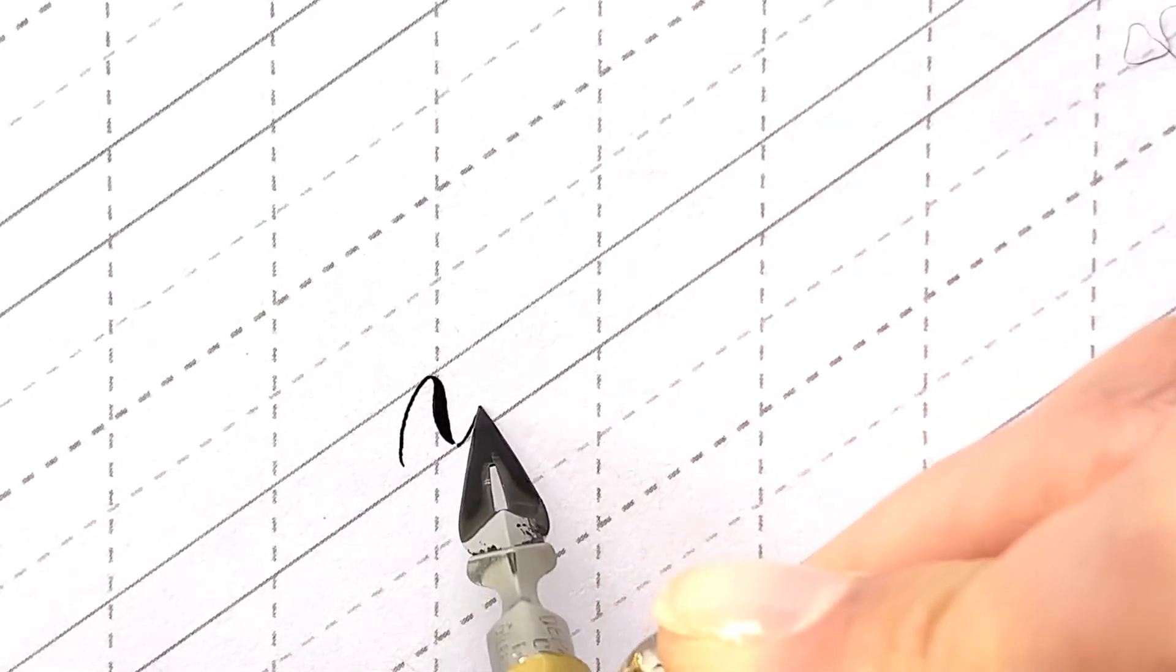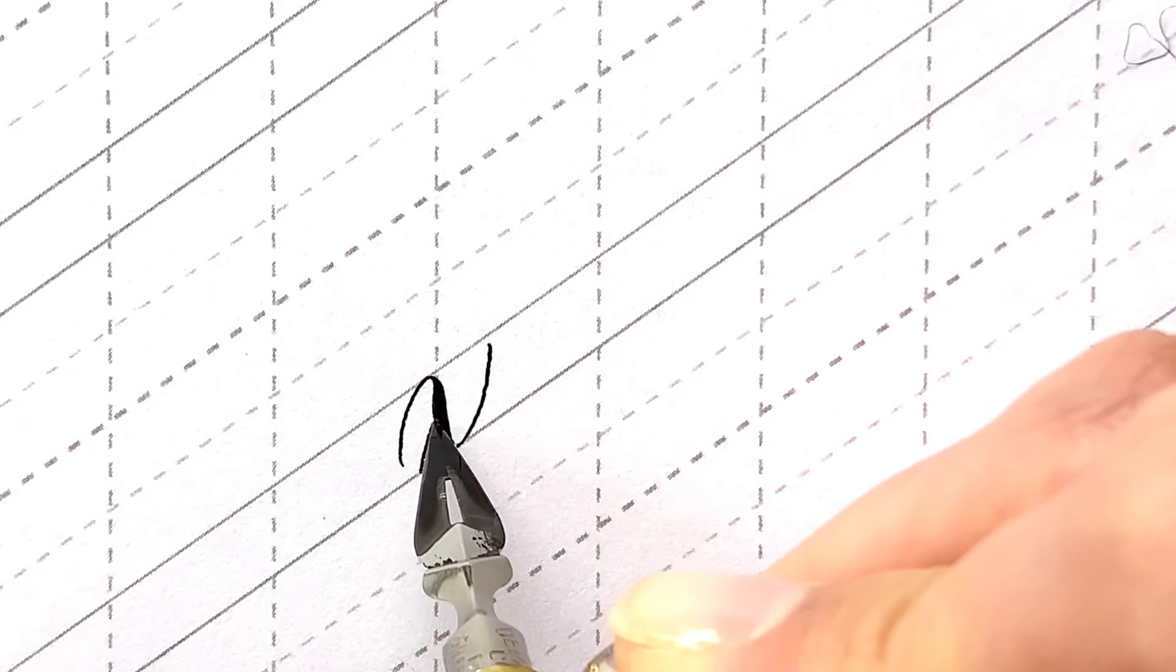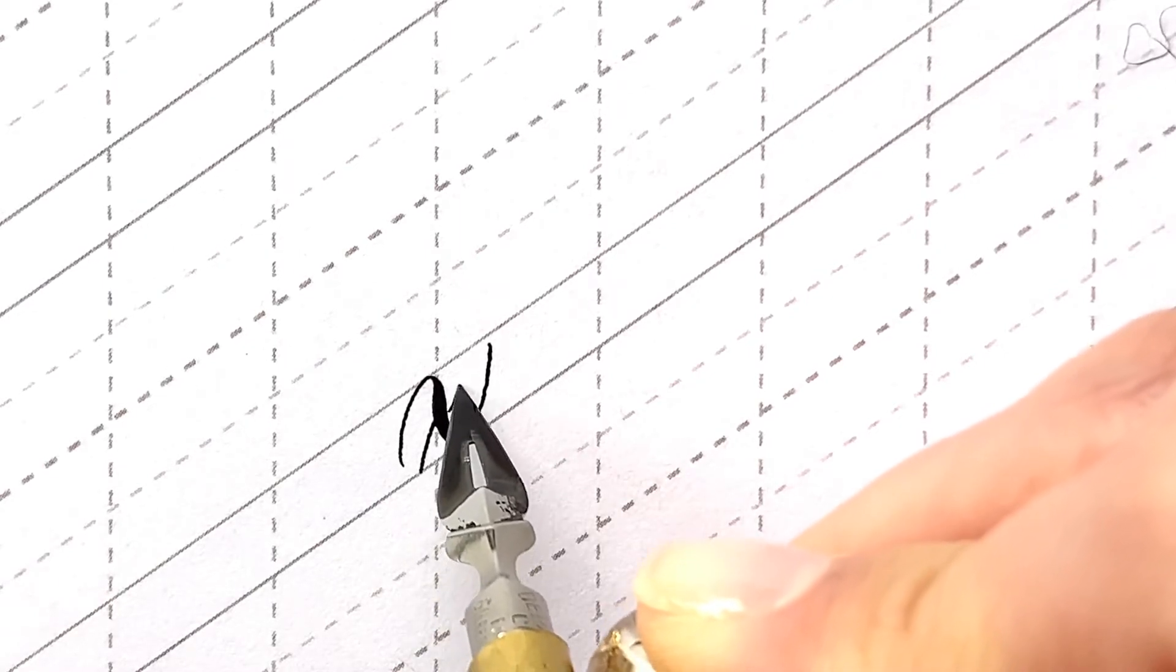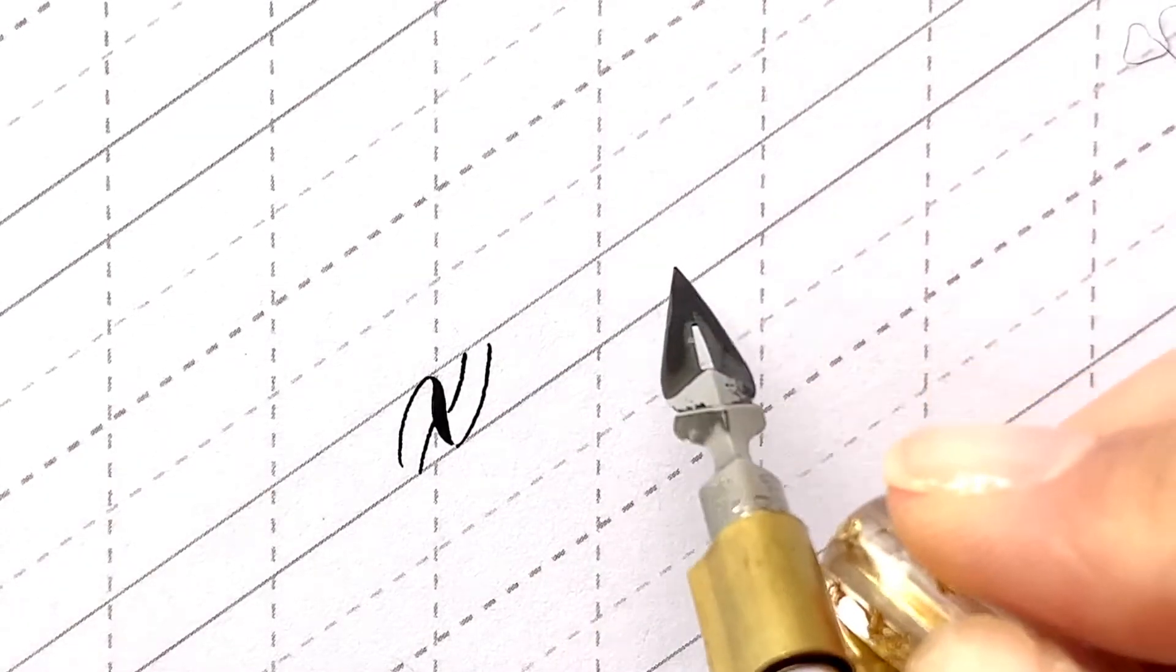Lowercase x. Start with the compound curve in the upright position at about 85 degrees against the baseline. Follow with the hairline across the shade. People would usually write this stroke from the top to the bottom, but I feel more natural to write from the bottom to the top. It's really up to you what's easier for you.